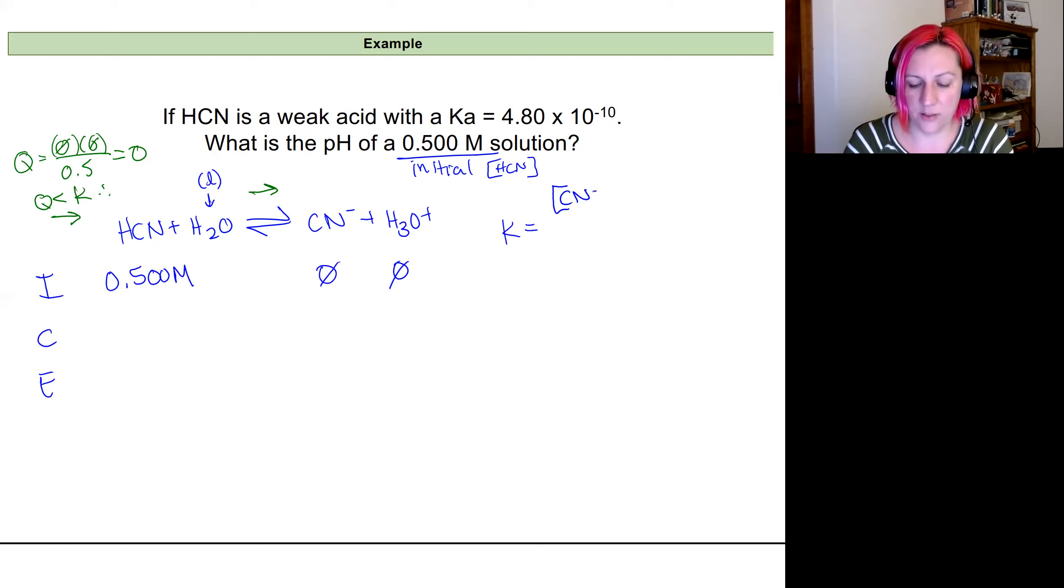I'm also going to write out my equilibrium expression here too at the very beginning. I know that it's going to be my product. So my cyanide ion, this is Ka rather than just K. And our H3O plus will all be divided by our HCN concentration at equilibrium. So let's figure out what those are.